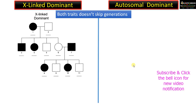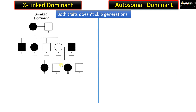This is the typical pedigree chart of X-linked dominant trait. How can we know that this is X-linked dominant? There is a confusion between X-linked dominant and autosomal dominant. How can we be sure that this is X-linked dominant?